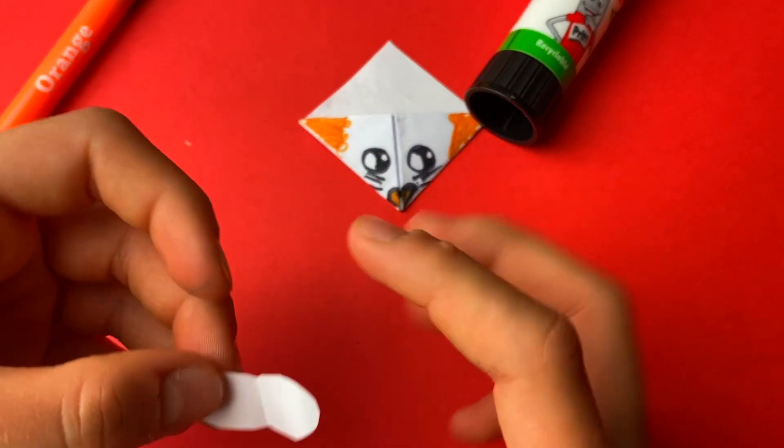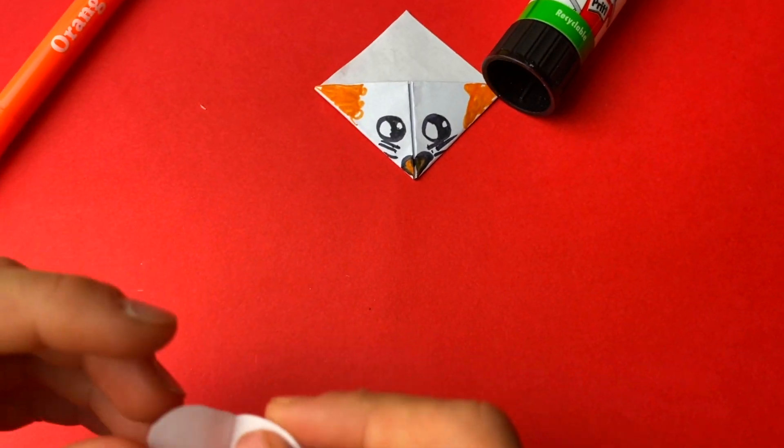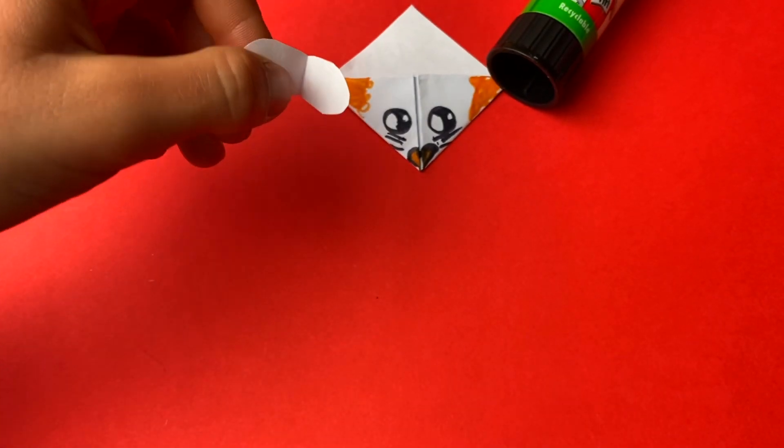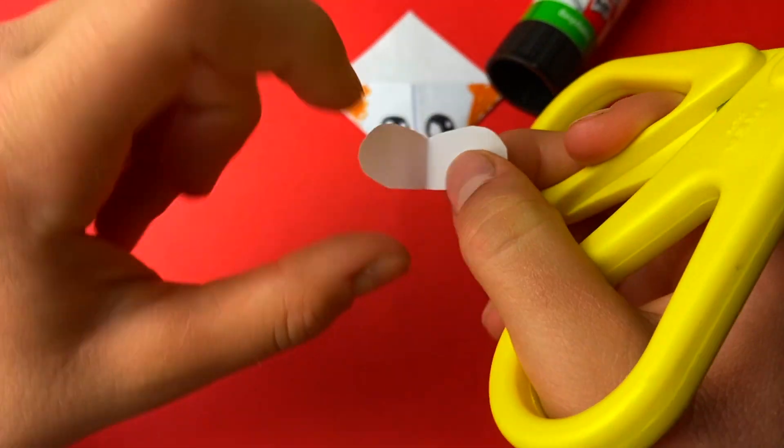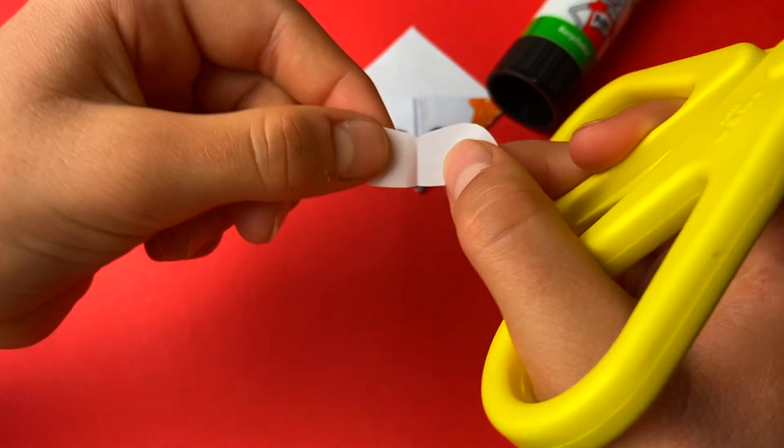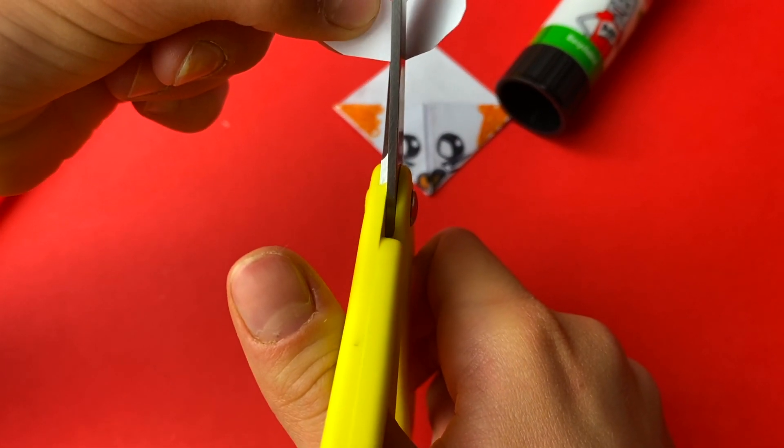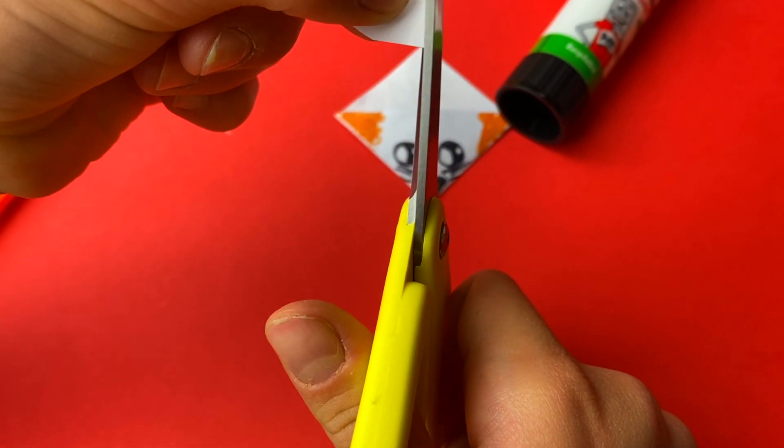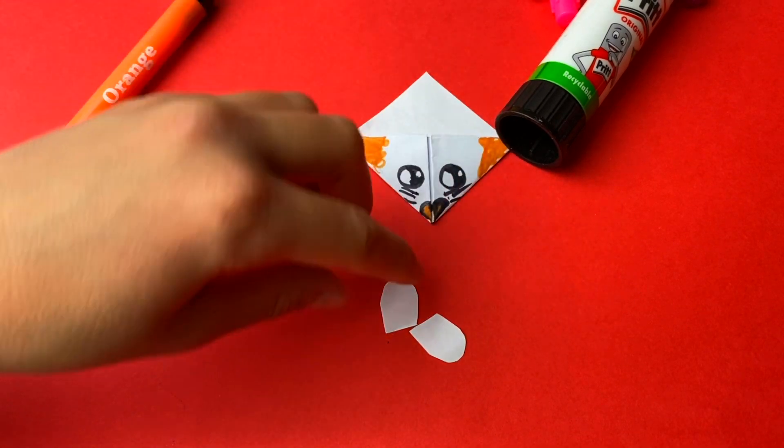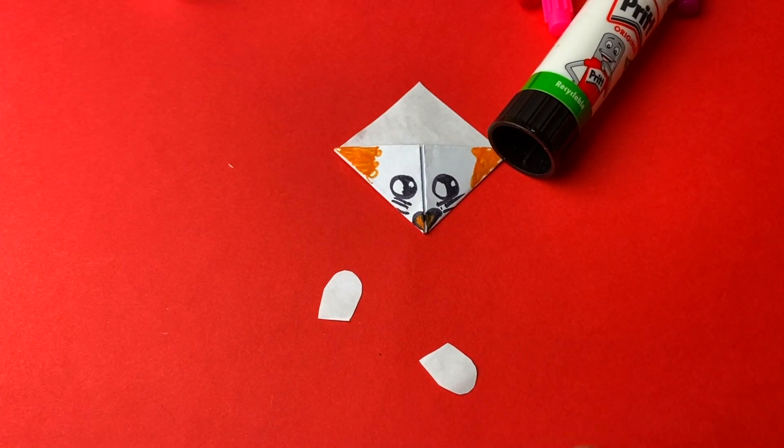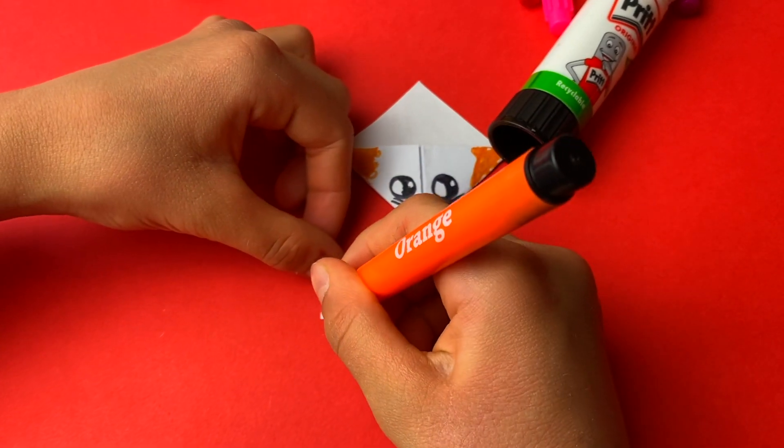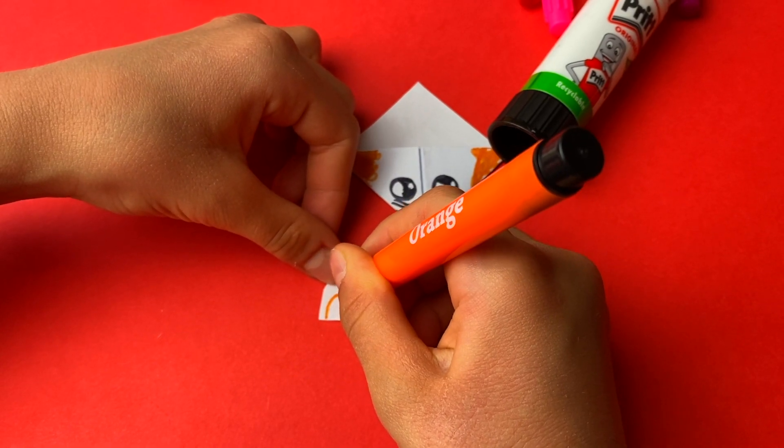If you open it up, you see like butterfly wings, and we need to cut the middle line here. There, and then you can just draw like a smaller ear here.